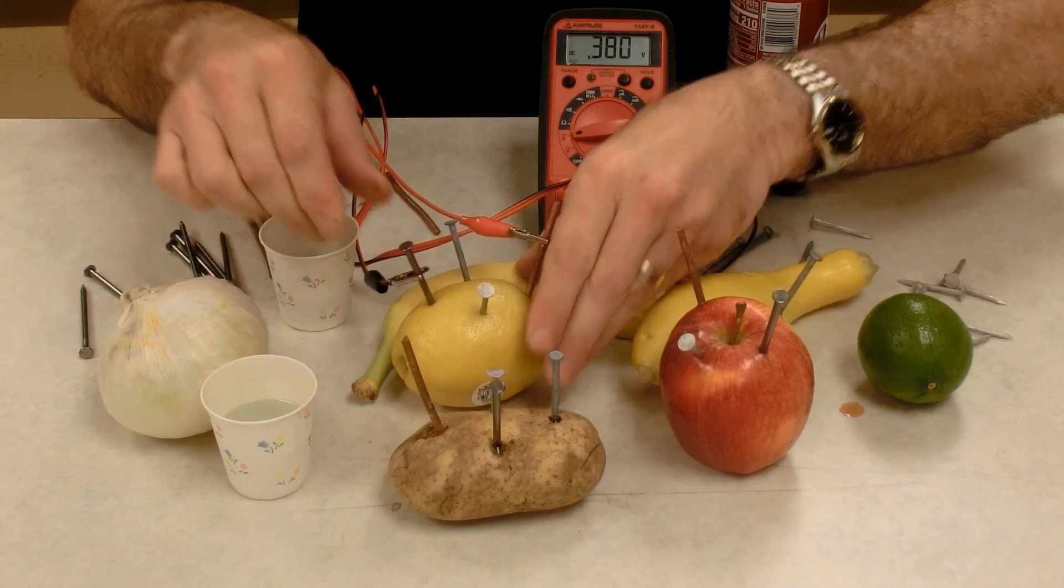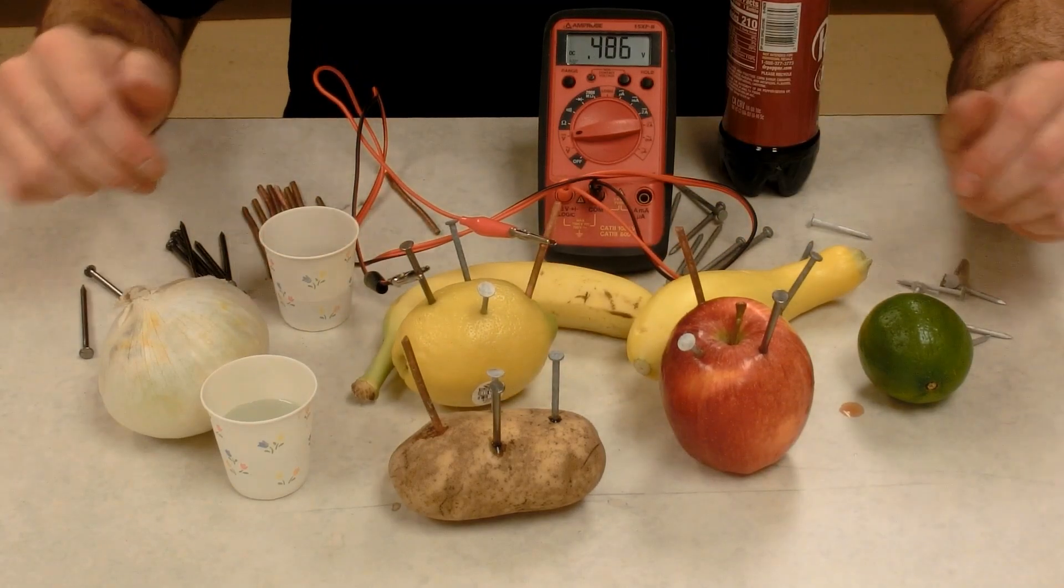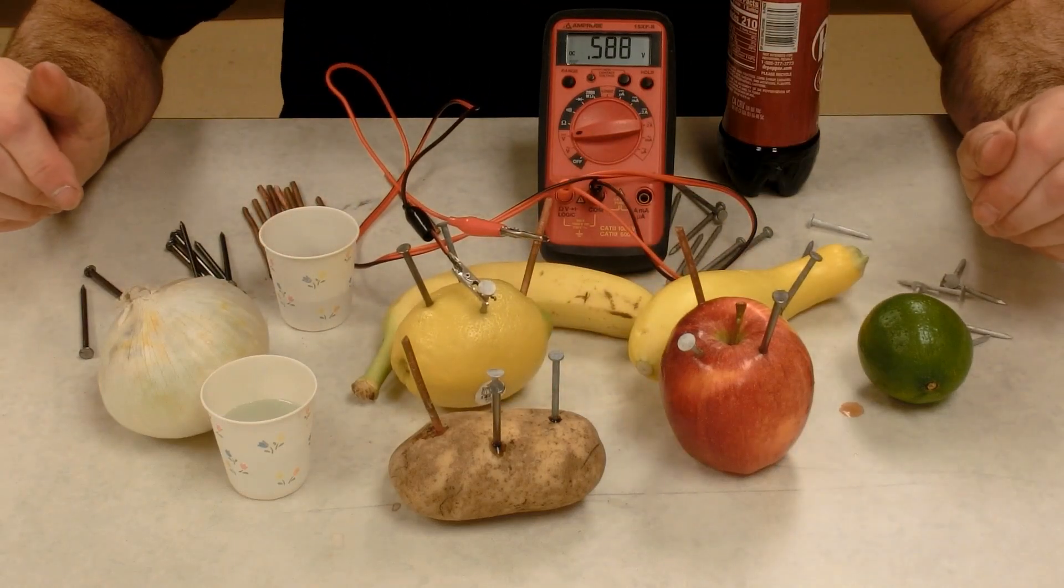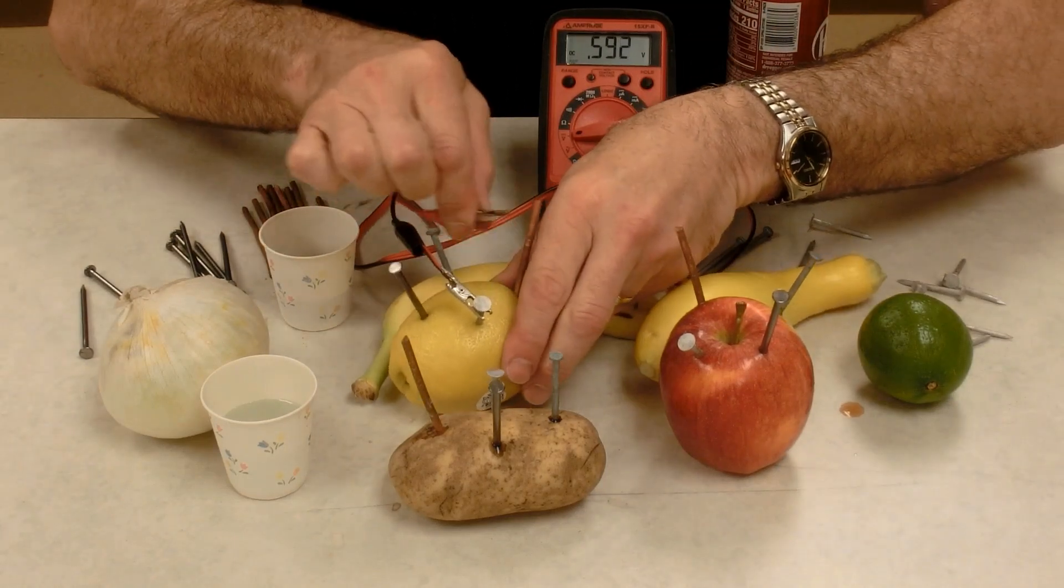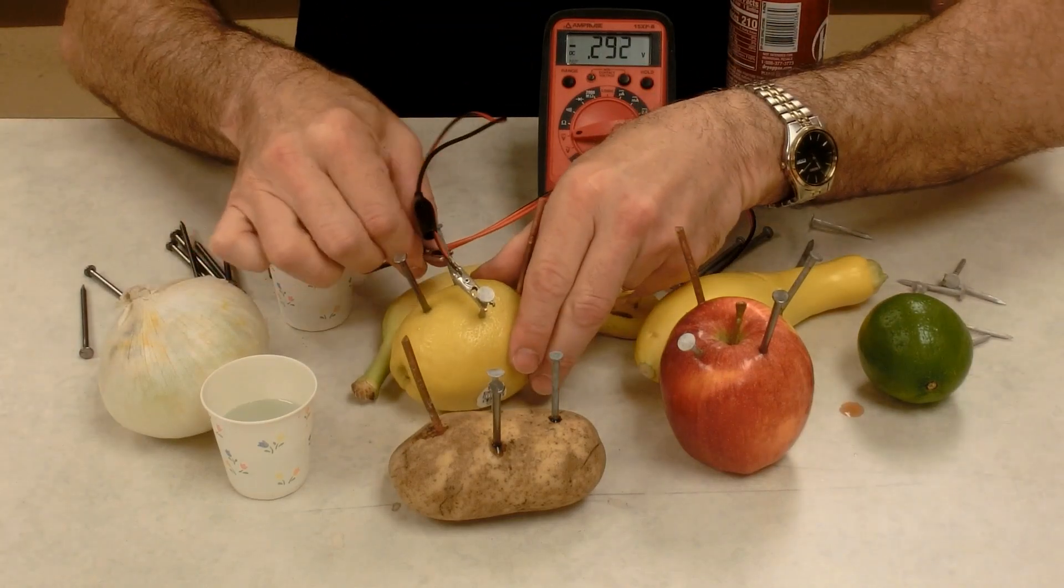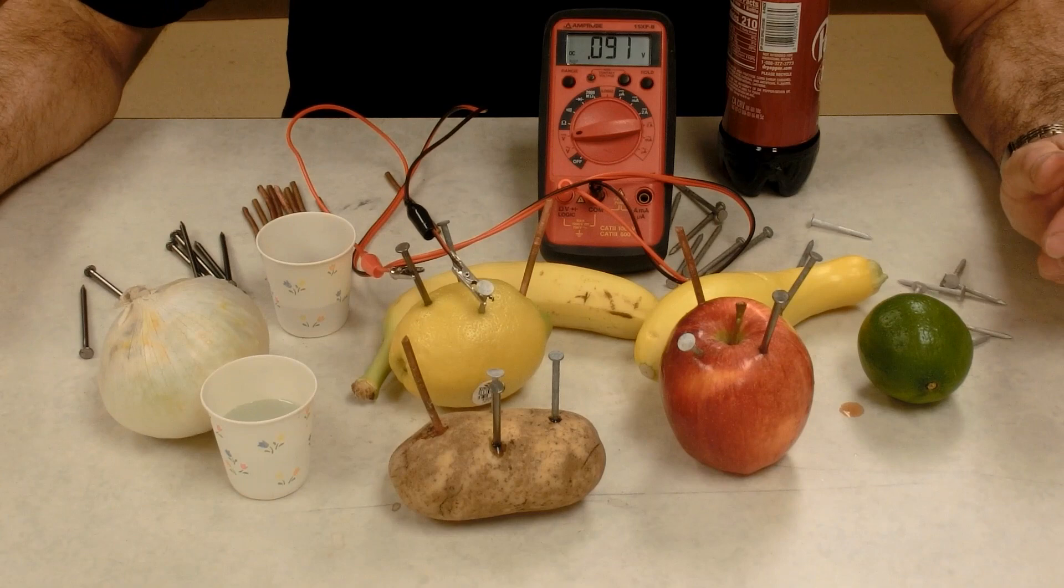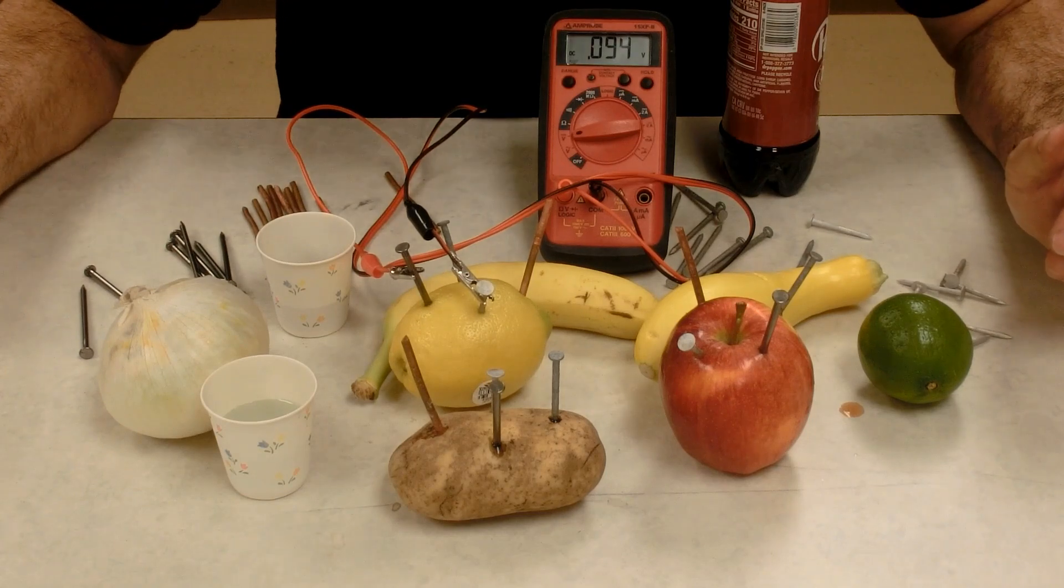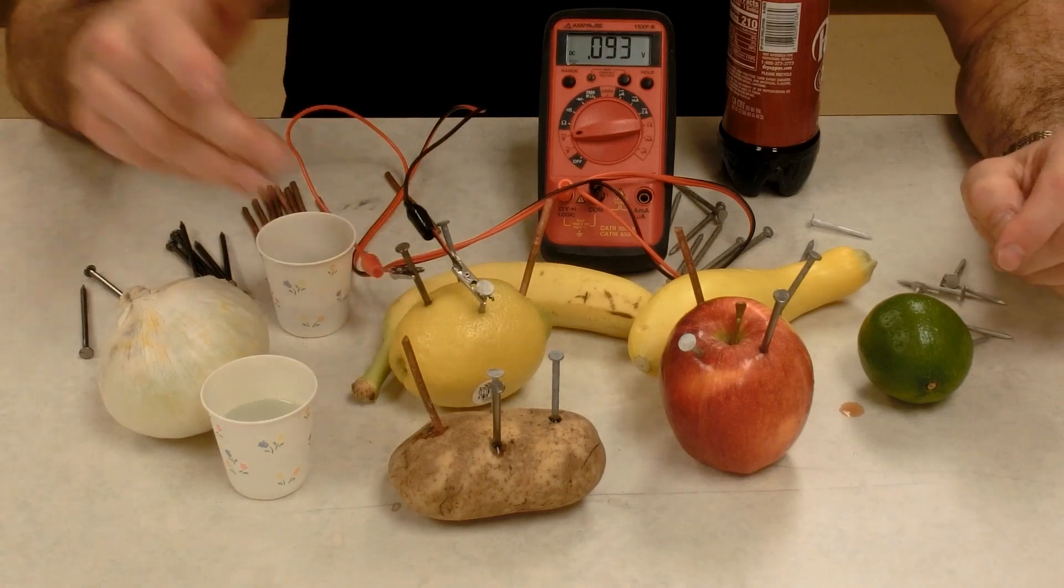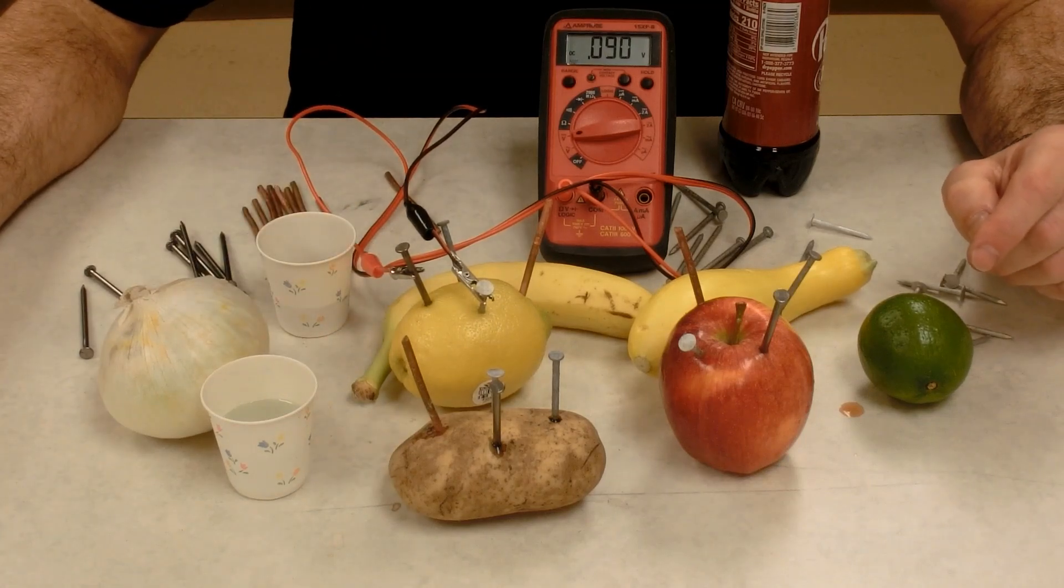Copper and steel, 0.48 volts. Copper and aluminum, 0.58 volts. Aluminum and zinc, 0.28. Aluminum and steel, 0.09. The apple, the potato, the lemon, the aluminum and steel all have the lowest voltage.